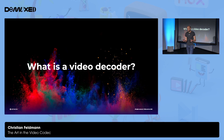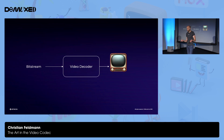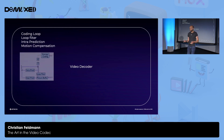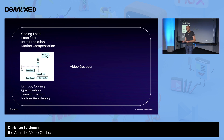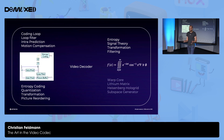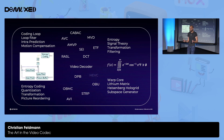The main hook of this talk is: what is a video decoder? The technical answer is that a video decoder is a unit that gets a bitstream, decodes some frames, and then you can show those frames using some frame-displaying device. Opening the box of the decoder, there's a bunch of stuff in there - coding loops, loop filters, entropy coding, quantization. More abstractly, there are theories of entropy, signal theory, transformation, and filtering. There's a lot of math involved, and so many acronyms.